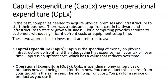A brief introduction to capital expenditure (CAPEX) versus operational expenditure (OPEX). In the past, companies needed to acquire physical premises and infrastructure to start their business, with substantial upfront costs in hardware and infrastructure. Cloud computing provides services without significant upfront cost. CAPEX is the spending of money on physical infrastructure upfront, with the expense deducted from the tax bill over time — it is an upfront cost whose value reduces over time. OPEX is spending money on services or products now and being billed for them now, deductible in the same tax year, with no upfront cost.